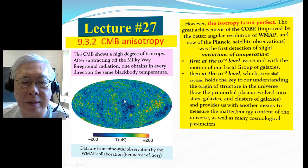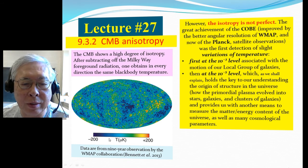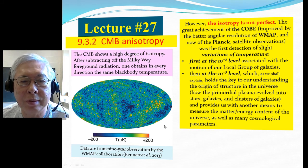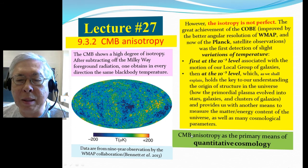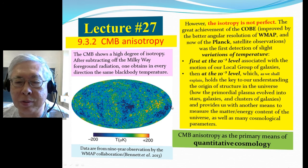These are different shades, different colors, different temperatures. We're talking about micro-Kelvin resolution. So the CMB anisotropy is a prime means for quantitative cosmology.